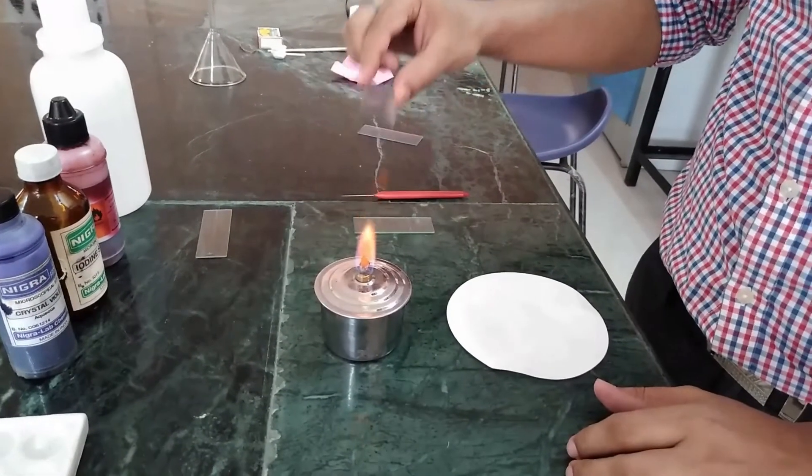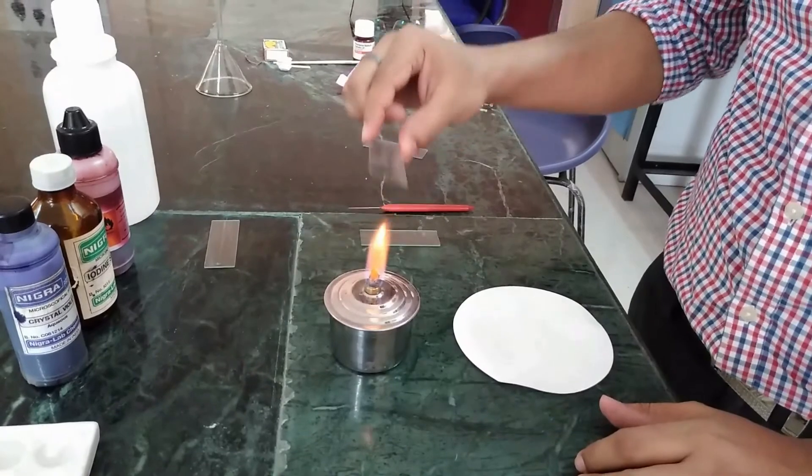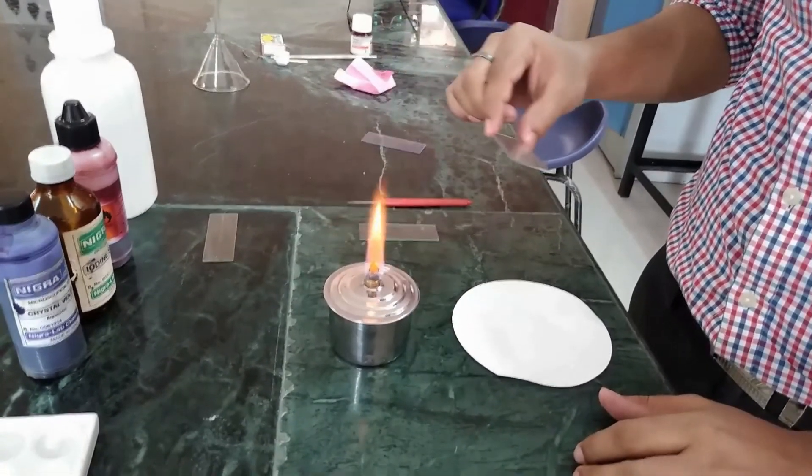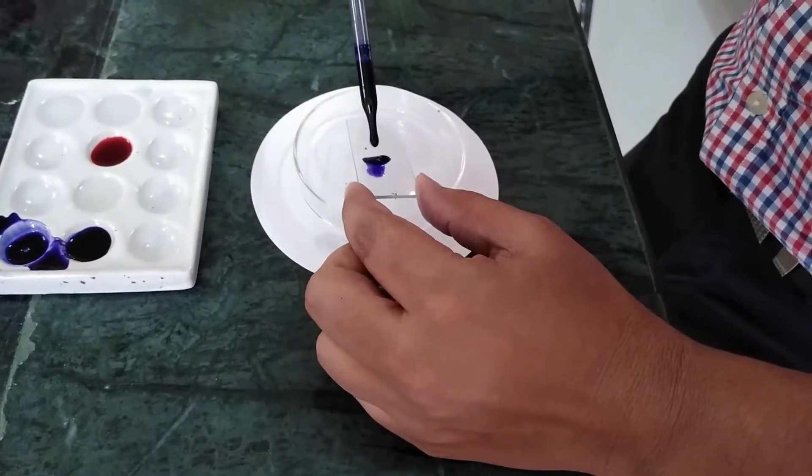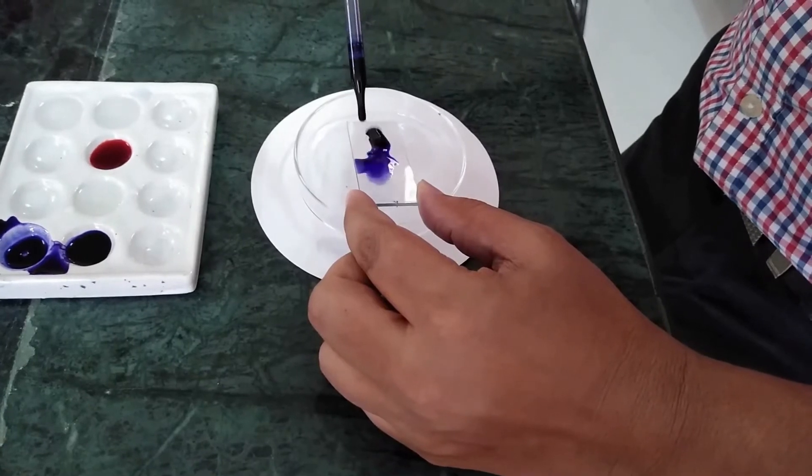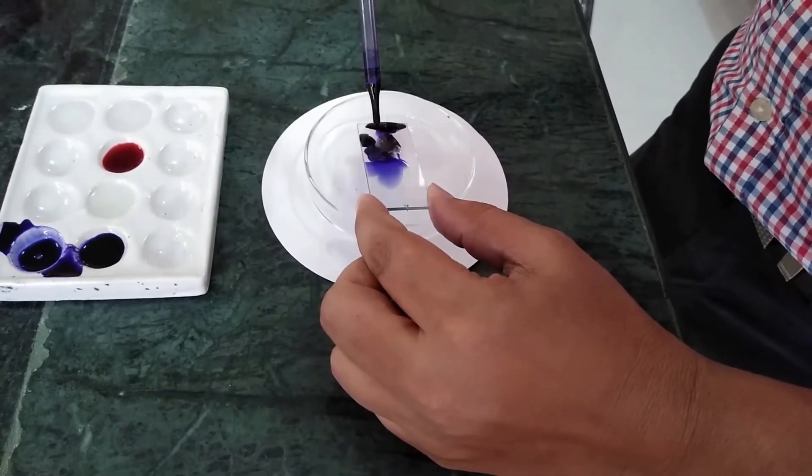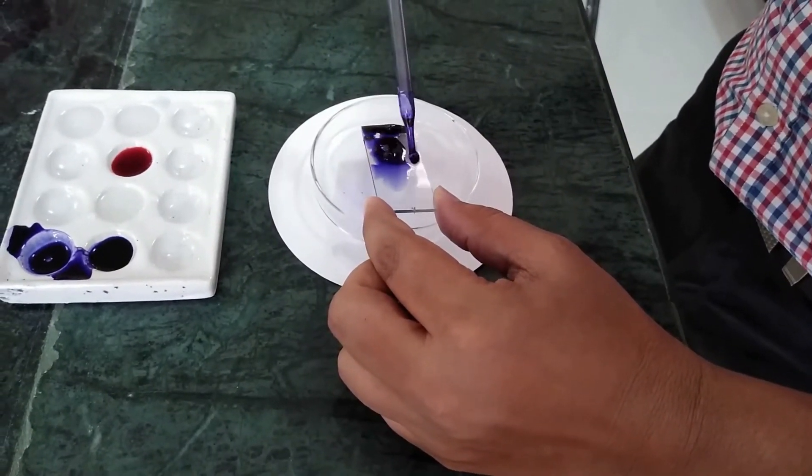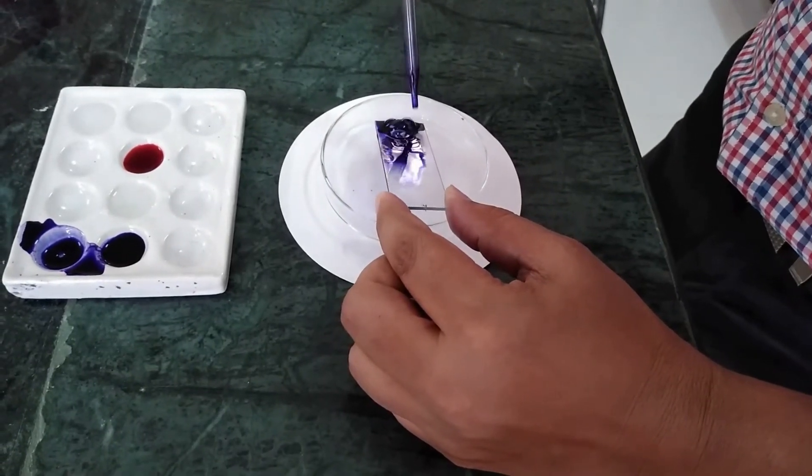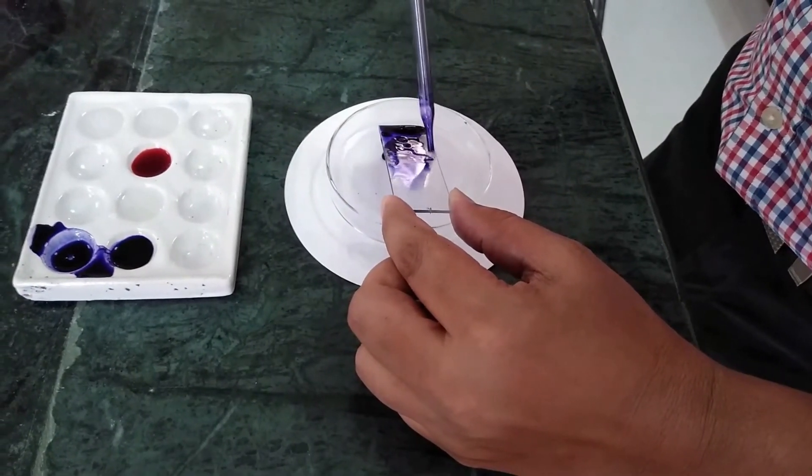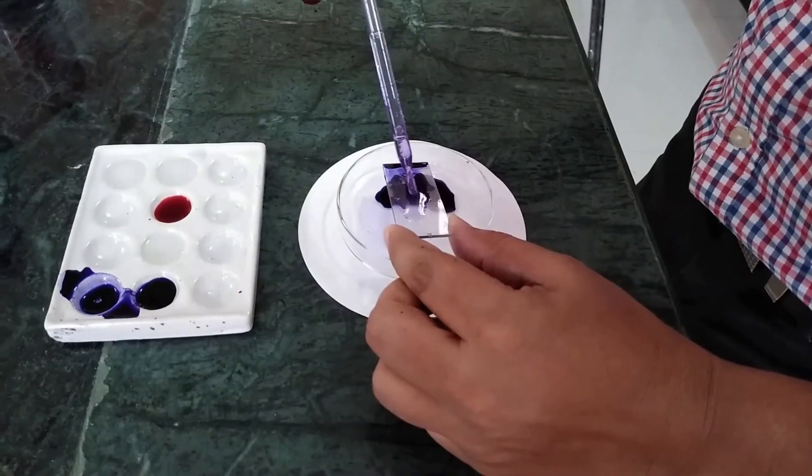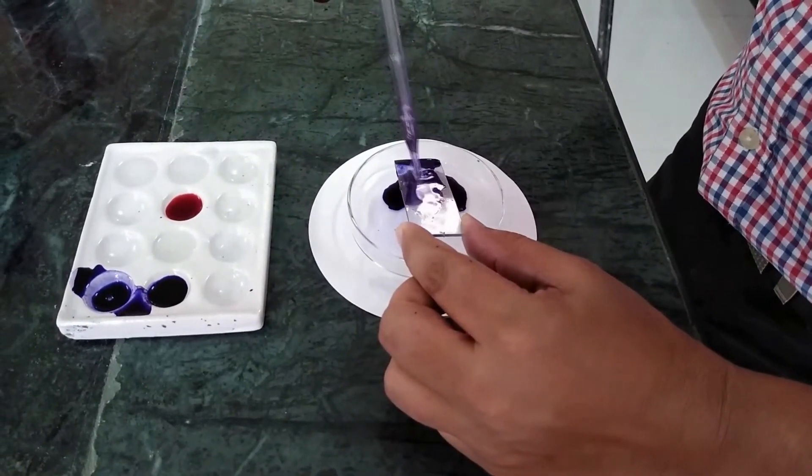Then, heat fixing is done over the flame. After that, the slide is flooded with crystal violet solution. Then, the slide is washed with clean water.